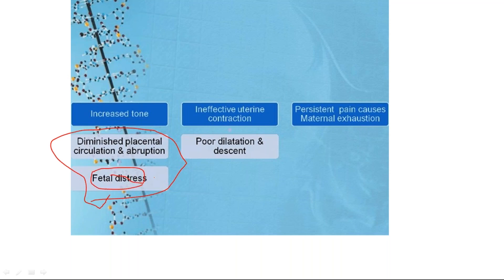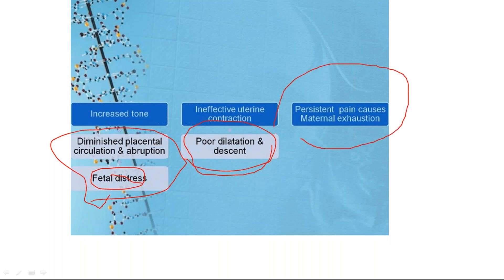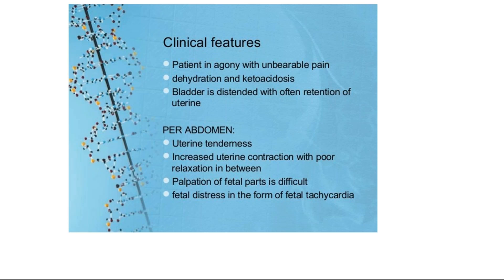Features of incoordinate uterine action: the basal tone is increased, diminishing placental circulation, and sometimes causing abruption of the placenta leading to fetal distress. Uterine contractions are ineffective, so there is poor cervical dilatation and poor descent of the presenting part. Increased tone reduces placental blood flow; there may be separation of the placenta. Persistent pain causes maternal exhaustion. The patient is in agony with unbearable pain, dehydration, ketoacidosis, and bladder distension with retention of urine.